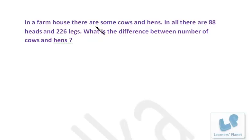Let's see this problem. In a farmhouse there are some cows and hens. In all there are 88 heads and 226 legs. What is the difference between number of cows and hens? This problem can be solved very easily by method of allegation.